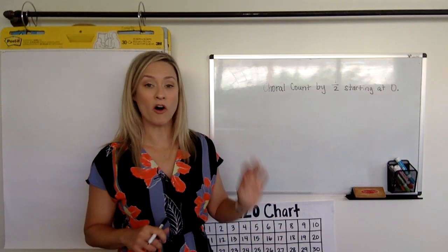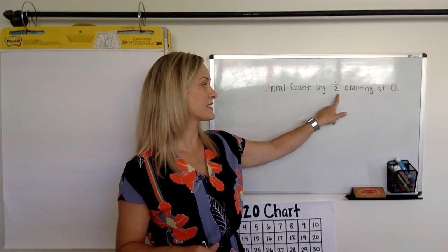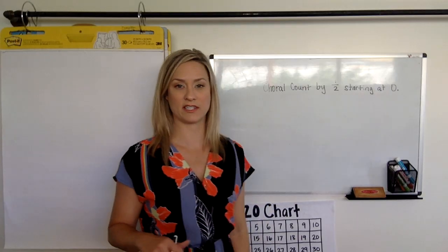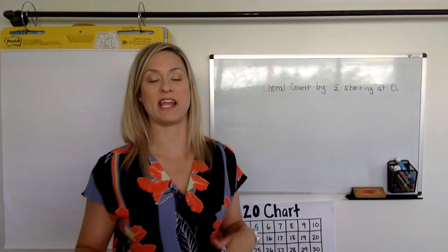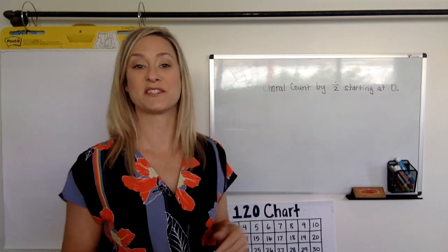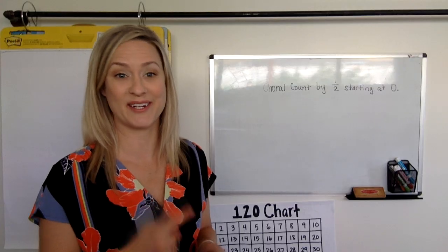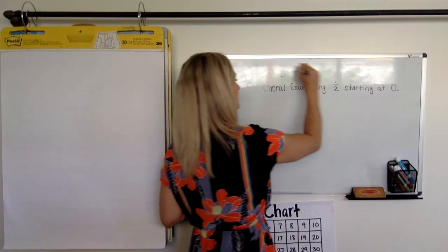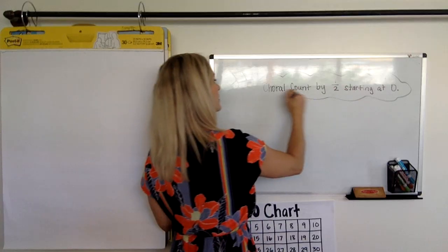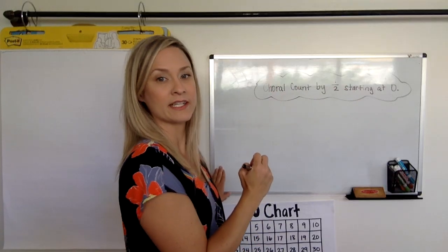So we are all going to count together and we're going to count by one half starting at zero in this choral count. So the first thing we would say is zero, one half, two halves, and so on. Alright, so we're all going to count together so you're going to count out loud with me. Are you ready? Here we go. I'm just going to put a little cloud around that. Alright, so ready? Count.